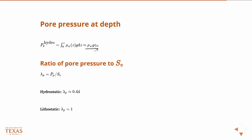Sometimes we talk about these things in terms of a ratio of the pore pressure to the vertical stress. Zoback uses lambda to characterize that ratio. The important definition is that when we talk about hydrostatic, that ratio is 0.44. This is where we get the estimate that 0.44 PSI per foot is a good approximation of hydrostatic pore pressure.